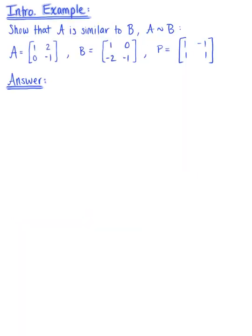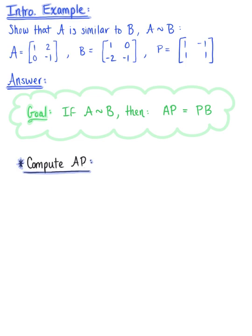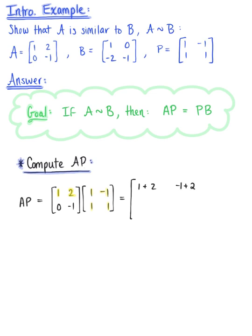In this introductory example, we want to show that matrix A is similar to matrix B. To do so, we need to confirm that A times P equals P times B. First, let's compute A times P using the row-column rule for matrix multiplication. Row 1 times column 1 gives 1 plus 2; row 1 times column 2 gives negative 1 plus 2; row 2 times column 1 gives 0 minus 1; and row 2 times column 2 gives 0 minus 1. This gives the resulting 2 by 2 matrix: 3, 1, negative 1, negative 1.